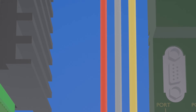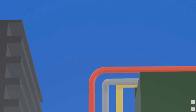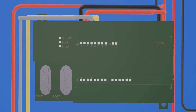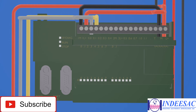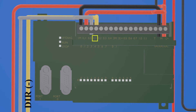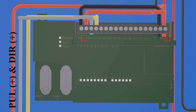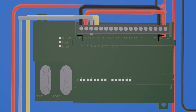Following the connections to the PLC: we have the negative pulse connected to the Q0.0 output, which is a pulse transistor output, and the negative direction is connected to the Q0.1 output, which when turned on changes the direction of rotation. The positive direction and positive pulse are connected to positive L, and the 1M is connected to M, which are the negatives of the output.